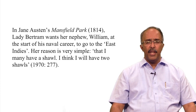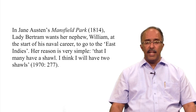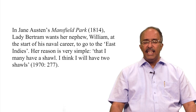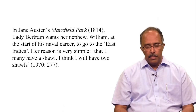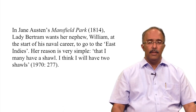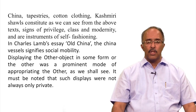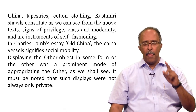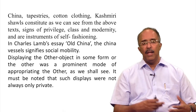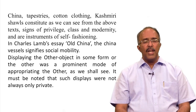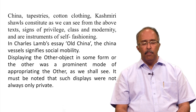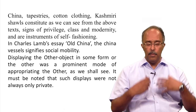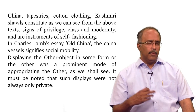Tea, cocoa, coffee, and sugarcane are re-assimilated into England as part of its identity, but there were other products as well. In Jane Austen's Mansfield Park, 1814, Lady Bertram wants her nephew William, at the start of his naval career, to go to the East Indies — and why? Her reason is very simple: 'that I may have a shawl. I think I will have two shawls.' China tapestries, cotton clothing, and Kashmiri shawls constitute, as we see from these texts, signs of privilege, class, and modernity, and are instruments of self-fashioning. Europe can only fashion itself with the arrival and consumption of things from various parts of the world. In Charles Lamb's essay Old China, the China vessels signify social mobility. Displaying the other object was a prominent mode of appropriating the other — you make it your own. That is roughly the commodity part of Romantic Orientalism.